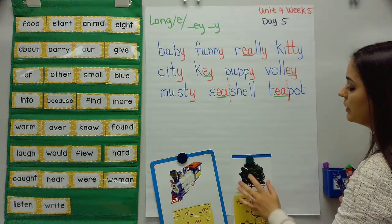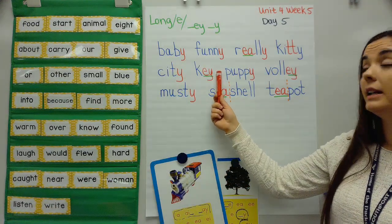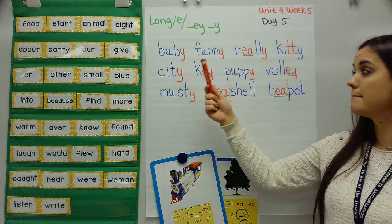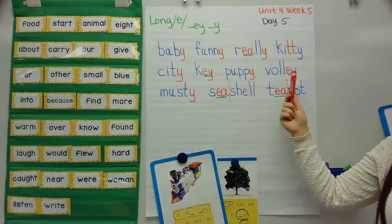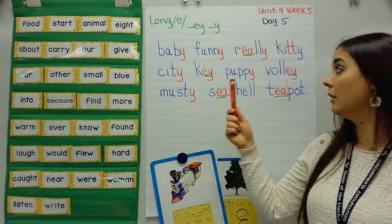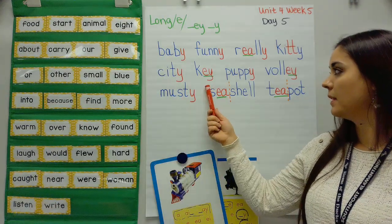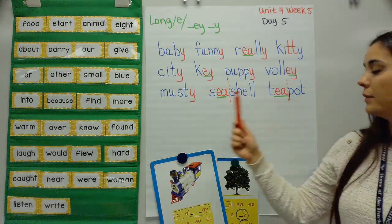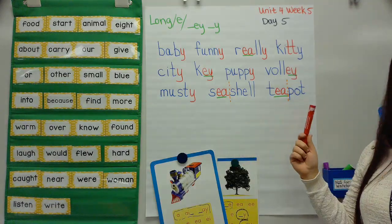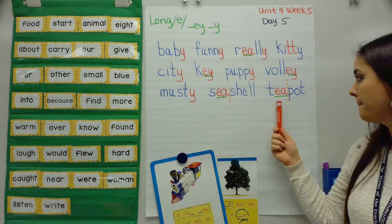So let's read our blending board. Baby. Funny. Really. Kitty — your turn. Wonderful. City. Key. Puppy. Volley — your turn. All right, wonderful. Musty. Seashell. Teapot — your turn. All right, wonderful.